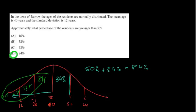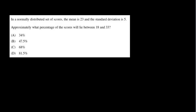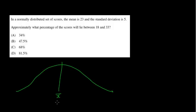Next question: in a normally distributed set of scores, the mean is 23. So again, normal distribution — the mean is 23, and the standard deviation is 5. So one standard deviation, or one Z score, is 28. Two Z scores, or two standard deviations, is going to be 33.